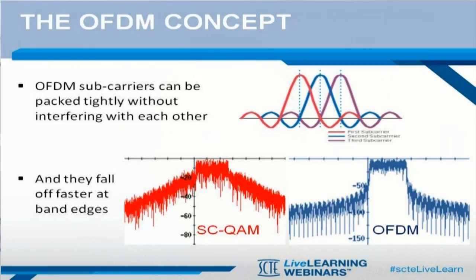Orthogonal frequency division multiplexing, or OFDM, is like conventional frequency division multiplexing, but the carriers are all generated by a single transmitter in a special way that allows them to be squeezed much more closely together and span a much wider RF bandwidth, up to 200 MHz.